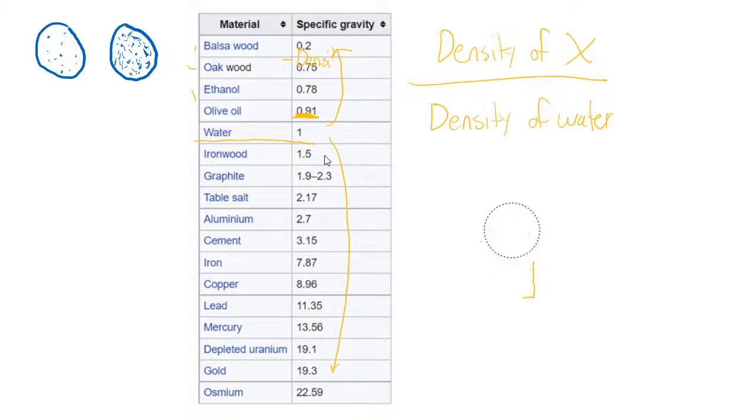Another thing specific gravity tells us, which is kind of interesting, is it tells us the percentage of a substance that will float in water, or the percentage of the substance that will be submerged in water. So as an example, ice has a specific gravity of about 0.9. So we can put it roughly in the middle here. And so, if we have the ocean, ocean is obviously water, and then we have an iceberg...